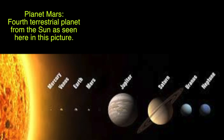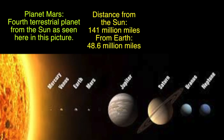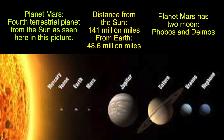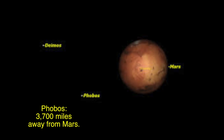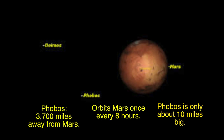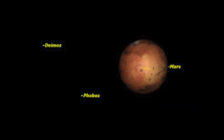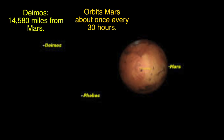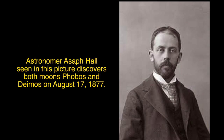Planet Mars, fourth terrestrial planet from the Sun. Distance from the Sun: about 141 million miles; from Earth: 48.6 million miles. Planet Mars has two moons, Phobos and Deimos. Phobos is 3,700 miles away from Mars, orbits Mars once every eight hours, and is only about 10 miles big. Deimos is 14,580 miles from Mars, orbits Mars about once every 30 hours, and is about 9.9 miles big. Astronomer Asaph Hall discovers both moons Phobos and Deimos on August 17, 1877.